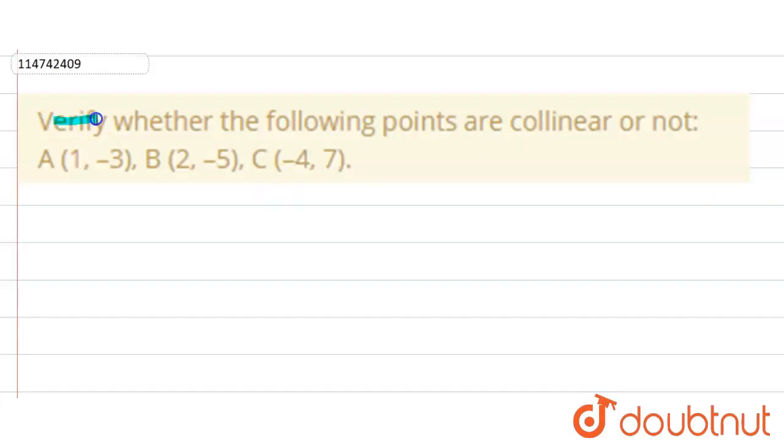In this question, we have to verify whether the following points are collinear or not. A (1, -3), B (2, -5), C (-4, 7). Collinear means in one line or not. We have to find it.